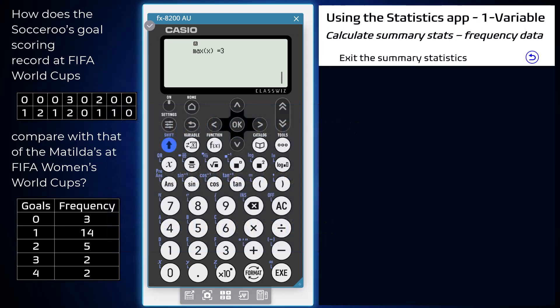The functionality of the Casio FX 8200 AU can be used to calculate summary statistics for data presented in a frequency table, like this one showing the number of goals scored by the Matildas in FIFA's Women's World Cup from 1995 to 2019.